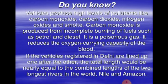Vehicles produce high levels of pollutants like carbon monoxide, carbon dioxide, nitrogen oxide, and smoke. Carbon monoxide is produced from the incomplete combustion of fuels such as petrol and diesel. This carbon monoxide gas is very poisonous — it reduces the oxygen-carrying capacity of the blood, making it very harmful. If the vehicles registered in Delhi were lined up one after another, the total length would be nearly equal to the combined length of the two longest rivers in the world — the Nile and Amazon.